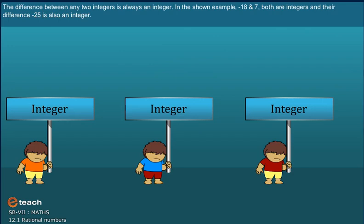The difference between any two Integers is always an Integer. In the shown example, minus 18 and 7, both are Integers and their difference minus 25 is also an Integer.